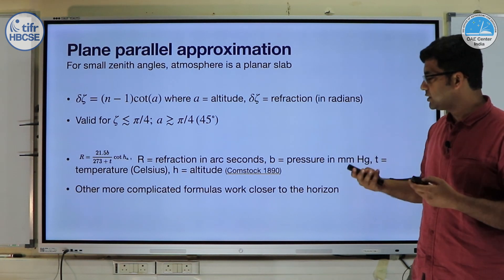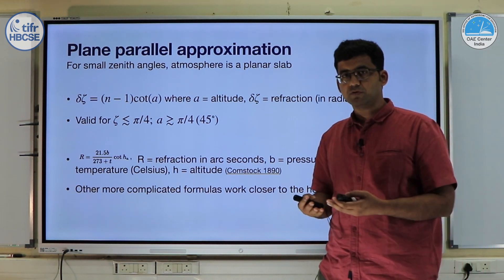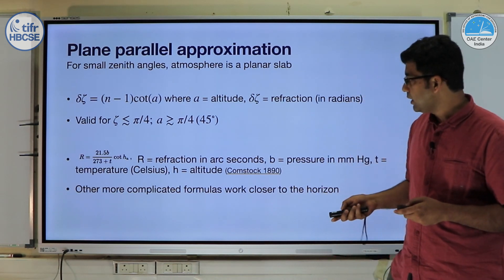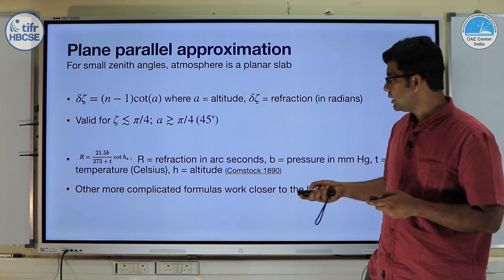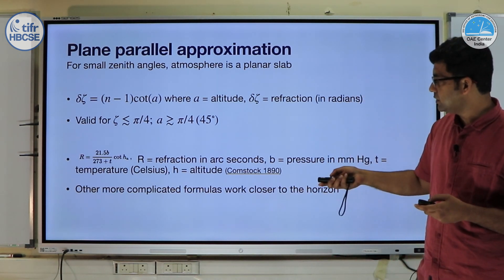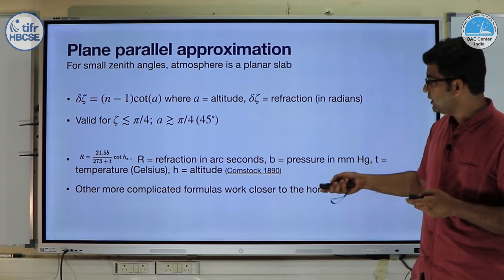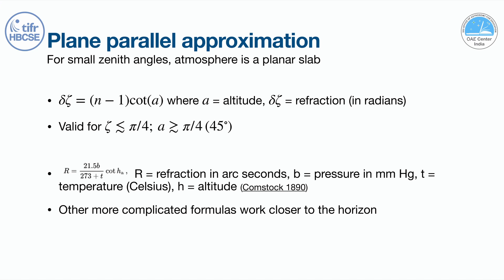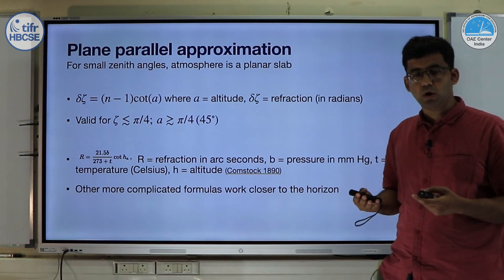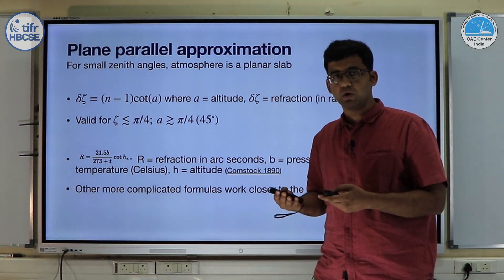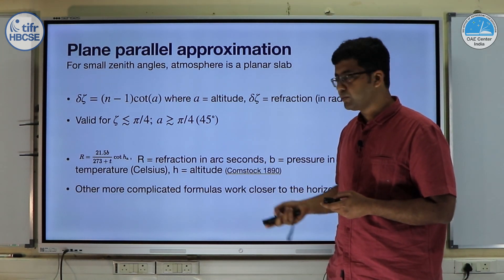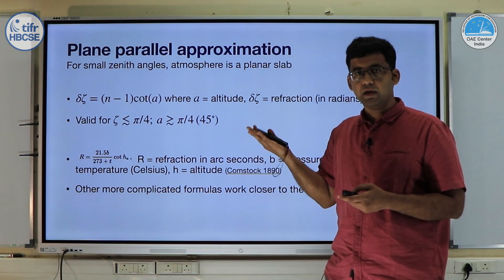The value of N depends on the temperature, pressure, and humidity of the air, and many numerical formulas have been used. One example is from Comstock in 1890, where R — the refraction in arc seconds — is a function of atmospheric pressure, temperature, and altitude. More complicated formulas exist that work closer to the horizon; all of these formulas are only valid at fairly high altitudes.